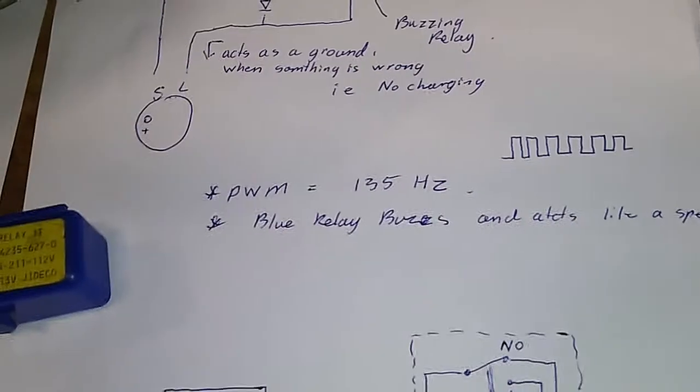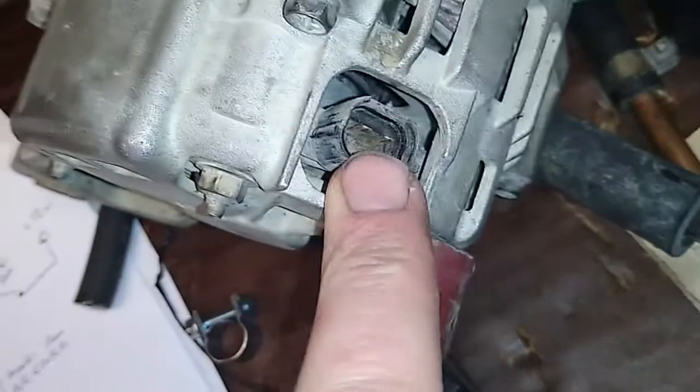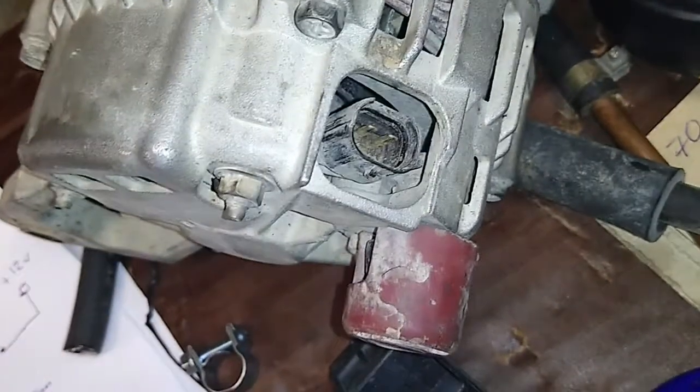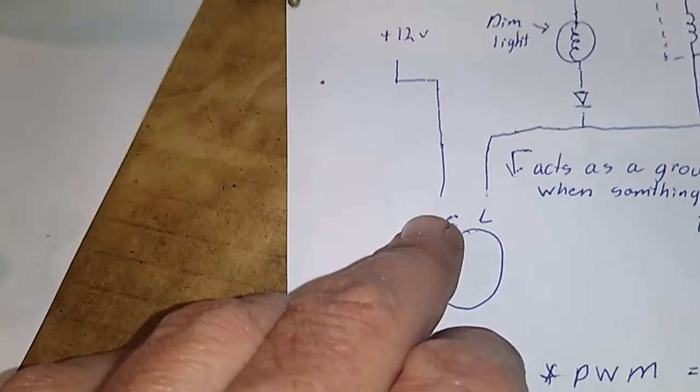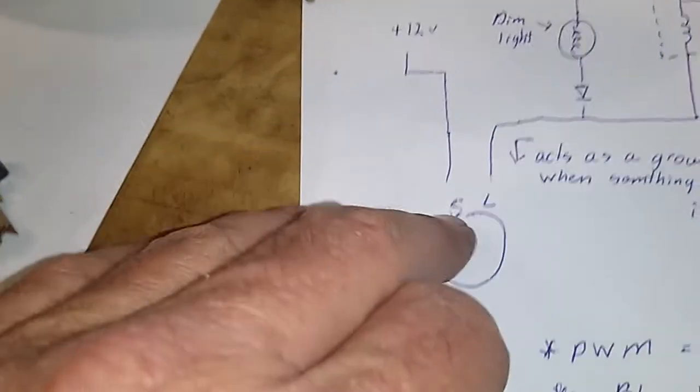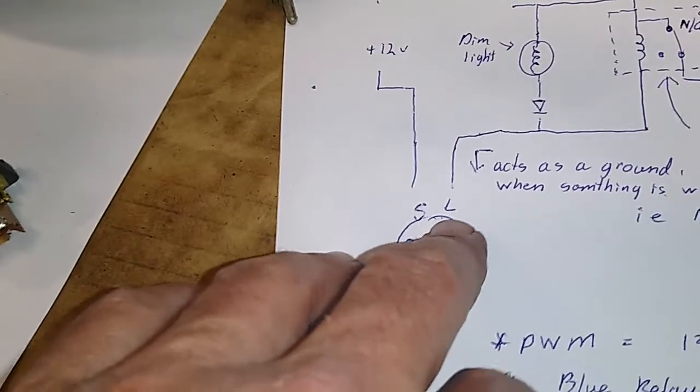Now, the reason the relay is buzzing, it's because your new alternator, this is the old one, on the plug here on the new alternator there's your L connector and S connector. S is for signal. S is for signal, and that's supplied with 12 volts so the alternator knows the charge status of the battery. And that's 12 volts on there all the time regardless of the keys are on or off.